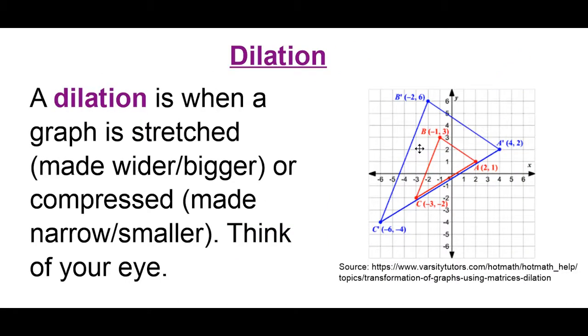Now, the second one we're going to look at is something called a dilation. A dilation is when a graph is stretched, aka made wider or bigger, or compressed, made narrower or smaller. And the best way to think about this is your eye. When your pupil dilates, it could either get really big, or it could get really small, depending on how much light is present in the room you're in.